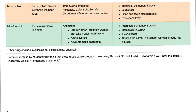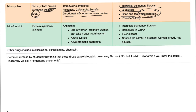Minocycline is a tetracycline, so it's a protein synthesis inhibitor — specifically the 30S subunit. It is used against rosacea, chlamydia, borrelia, mycoplasma, etc. Side effects include interstitial pulmonary fibrosis, GI distress, bone and teeth discoloration (a yellowish discoloration), and photosensitivity.